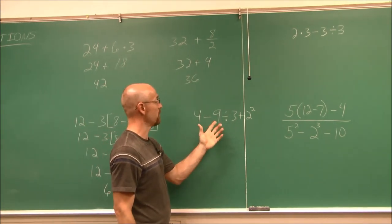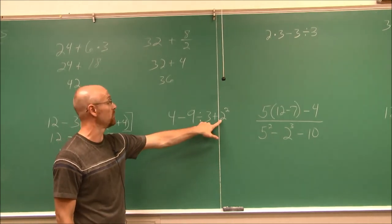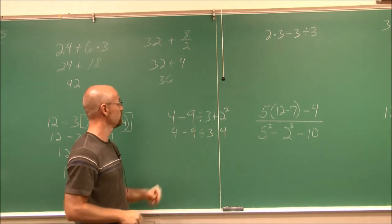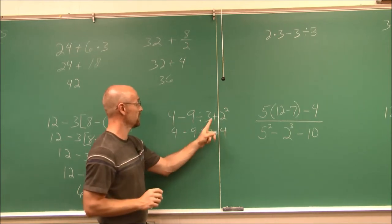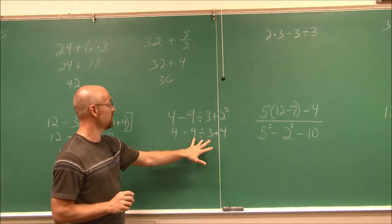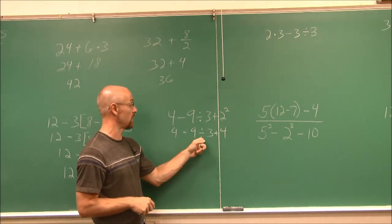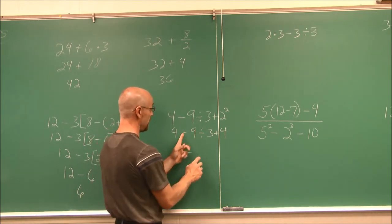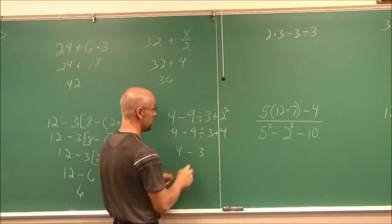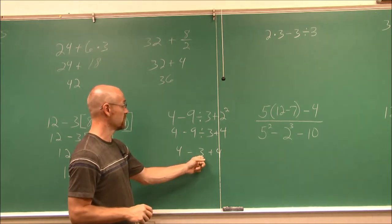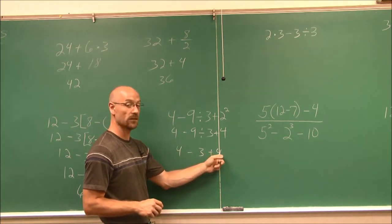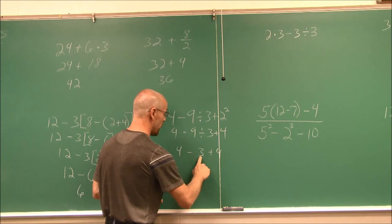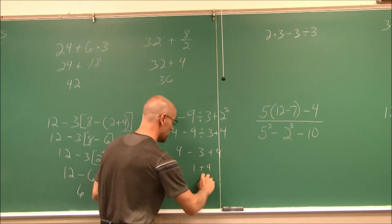Here we have lots of operations, no grouping symbols, but we do have exponents. I evaluate the exponent first and carry the rest of the problem down. Now I see subtraction, division, and addition. According to order of operations, I do division before addition or subtraction. 9 divided by 3 is 3. Now working addition and subtraction from left to right: 4 minus 3 is 1, and 1 plus 4 is 5.